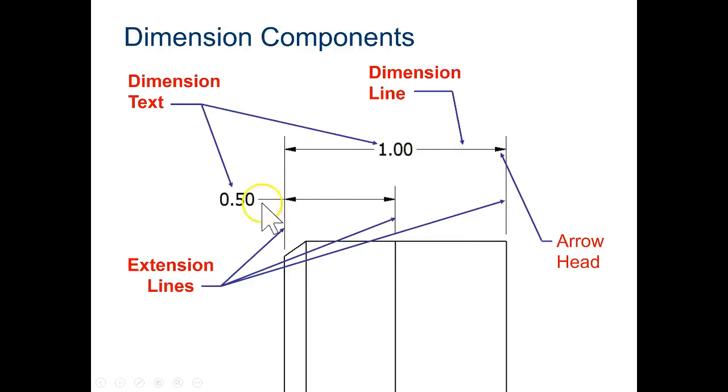Notice that the dimension text is either between the extension lines or next to the extension lines. The dimension line has arrowheads on it, and it runs from one extension line to the other.